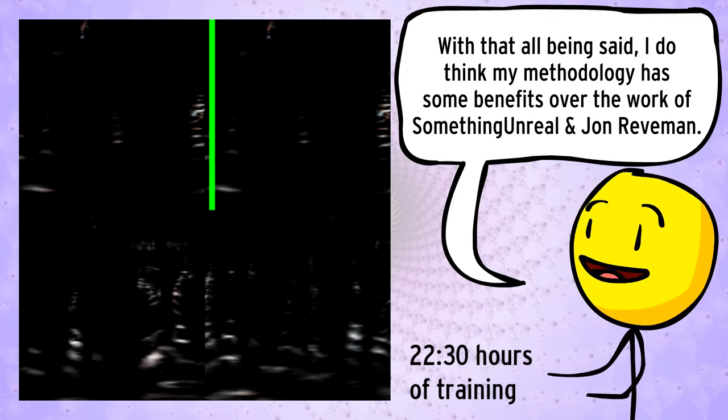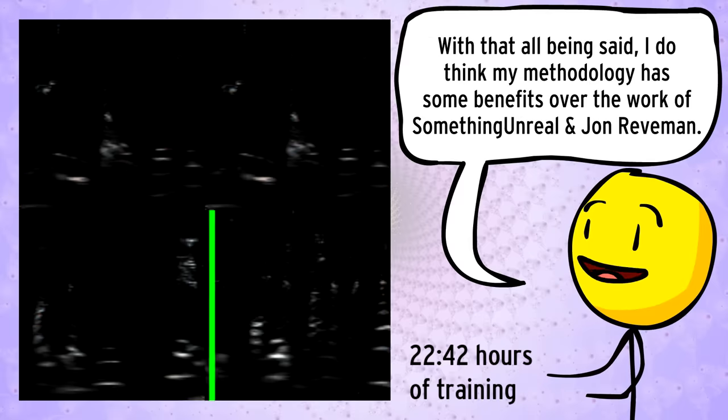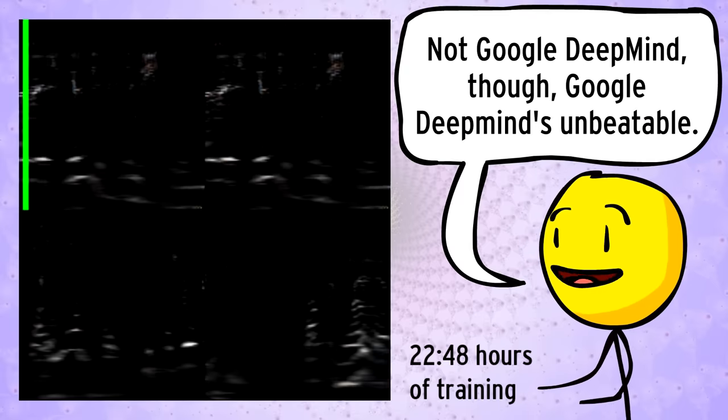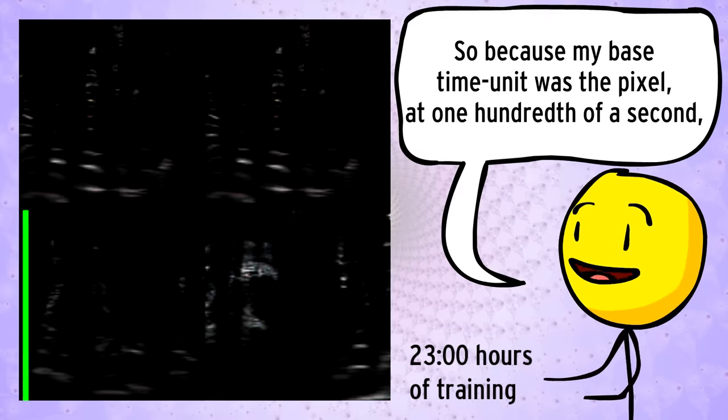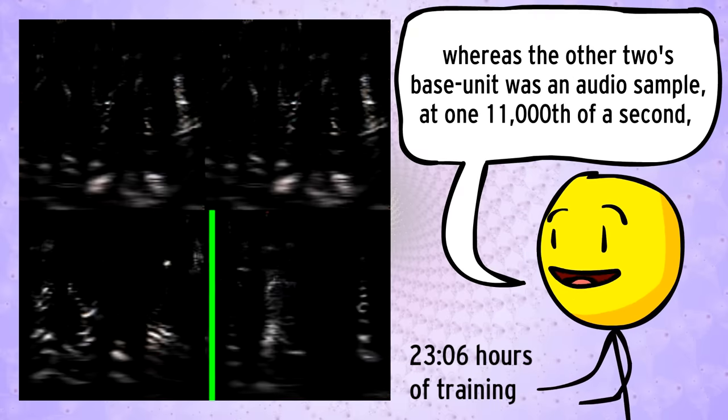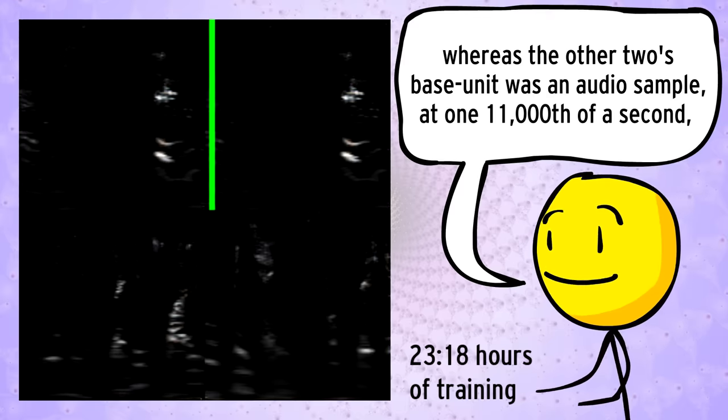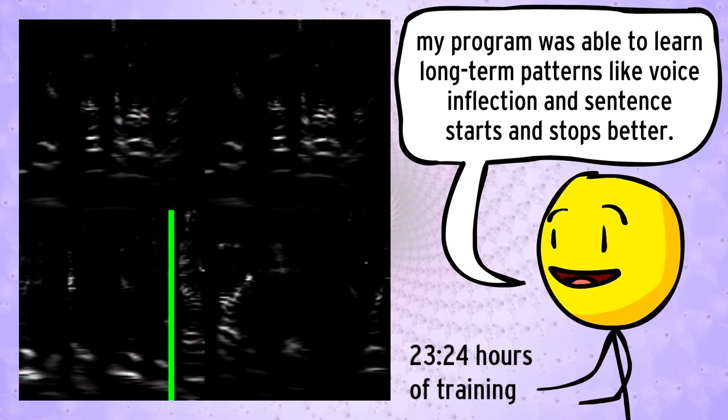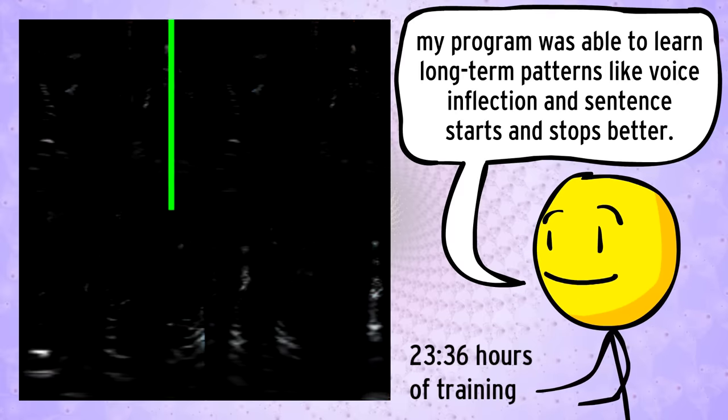With that all being said, I do think my methodology has some benefits over the work of Something Unreal and John Reeveman. Not Google DeepMind though, Google DeepMind's unbeatable. So because my base unit of time was the pixel at one hundredth of a second, whereas the other two's base unit of time was the audio sample at one eleven thousandth of a second, my program was able to learn long-term patterns like voice inflection and sentence starts and stops better.